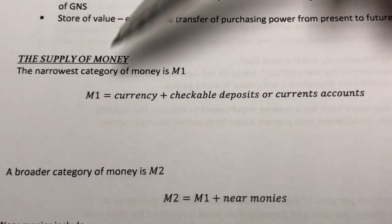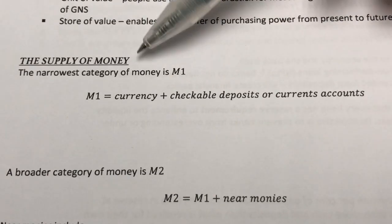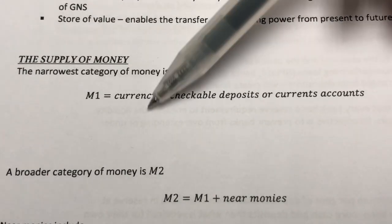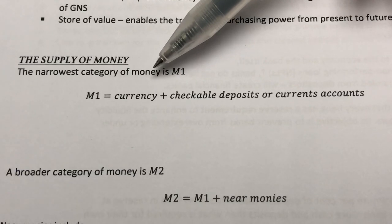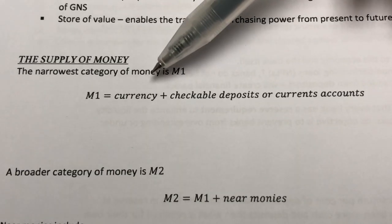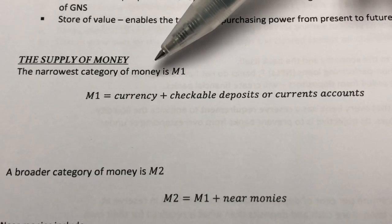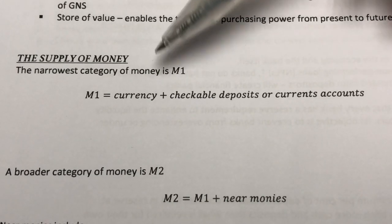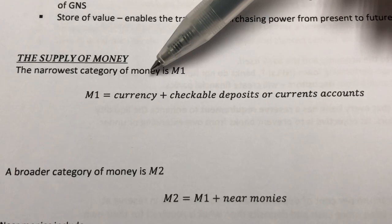As mentioned, M1 is the narrowest category of money. M1 consists of currency in circulation. That means these are the banknotes and coins issued by the central bank in Malaysia that are in the hands of the public. Currency is widely used as a medium of exchange as they are highly liquid.